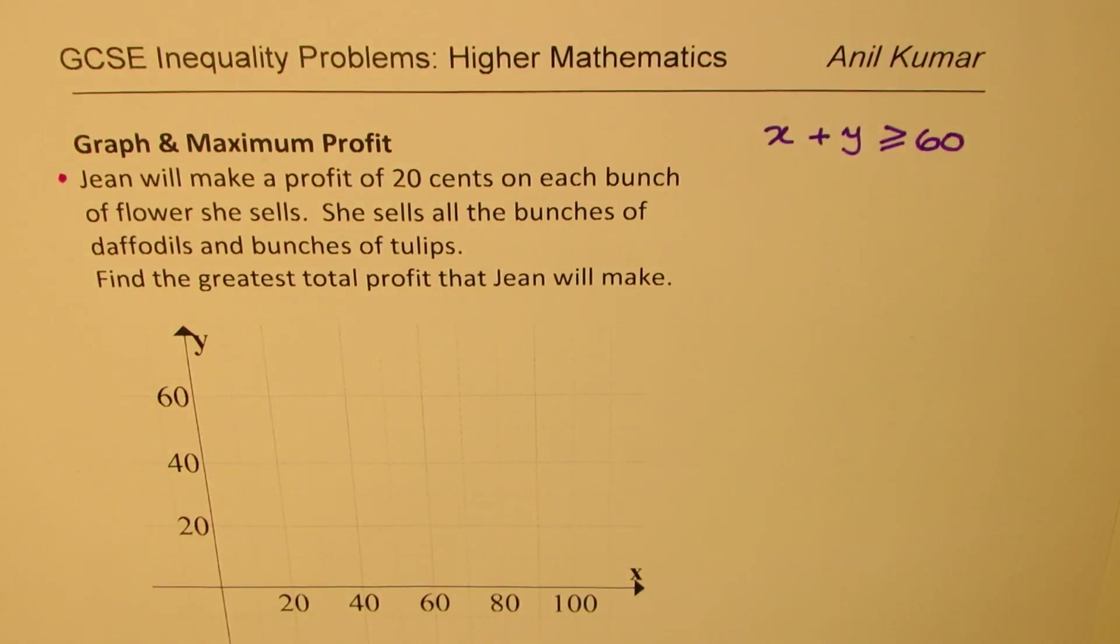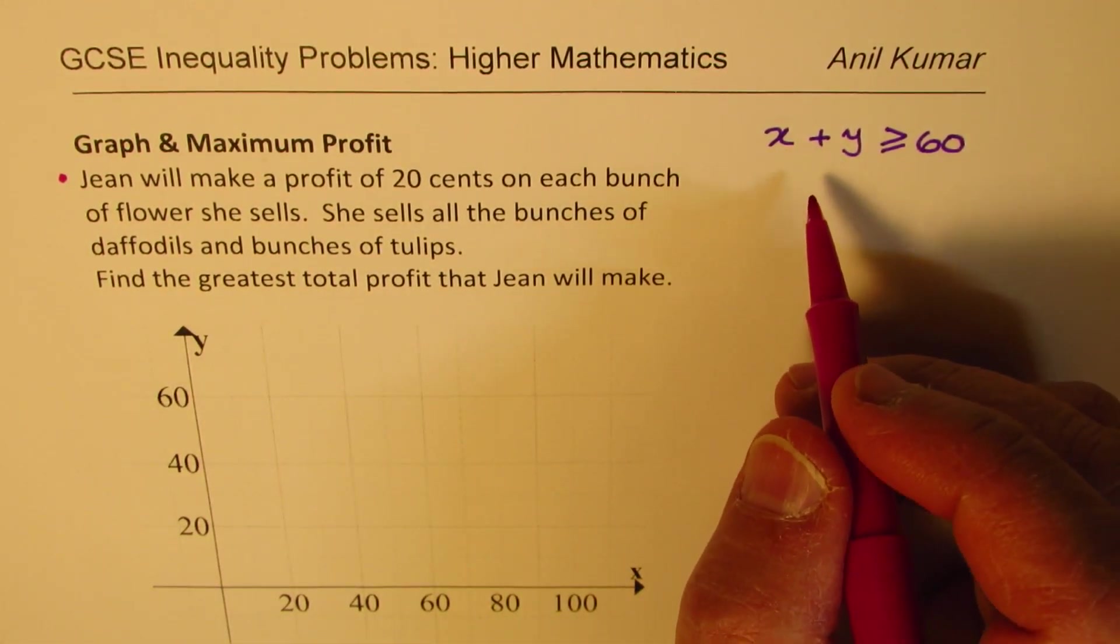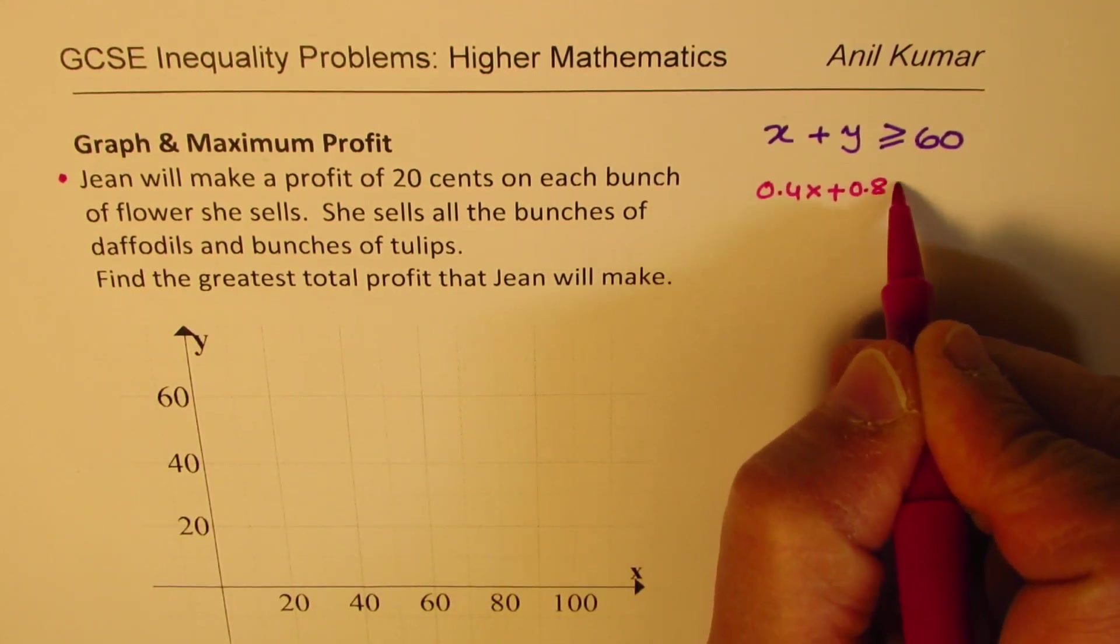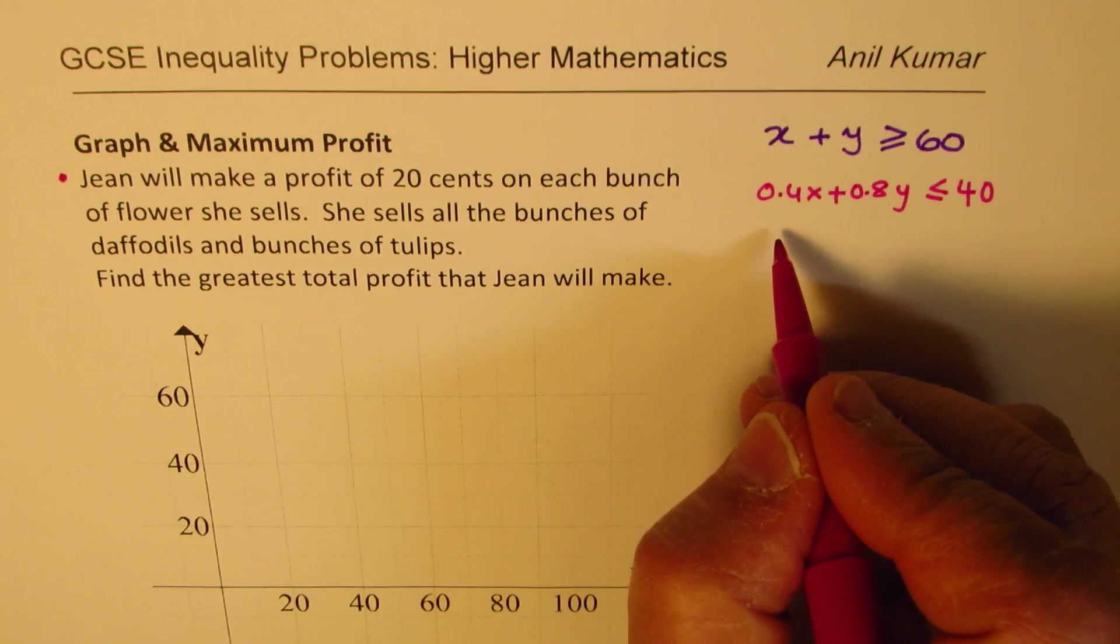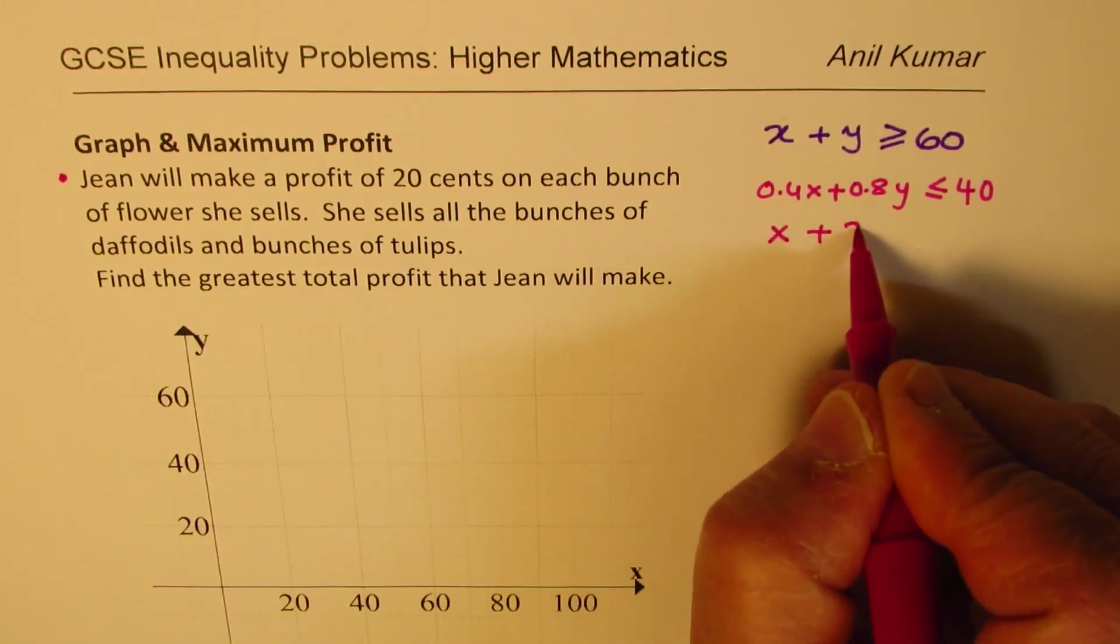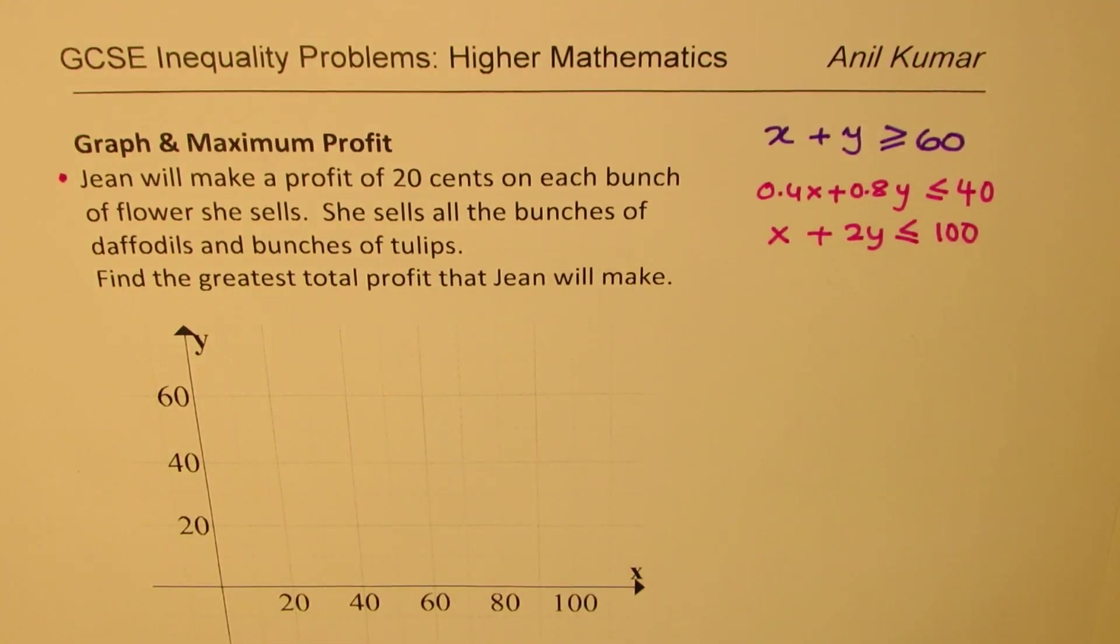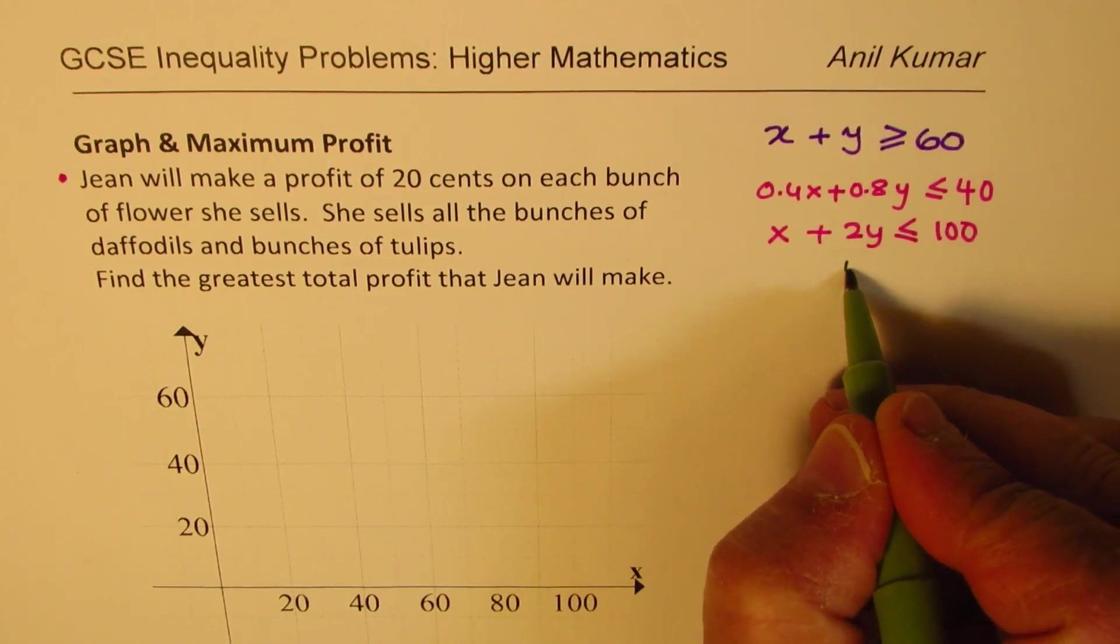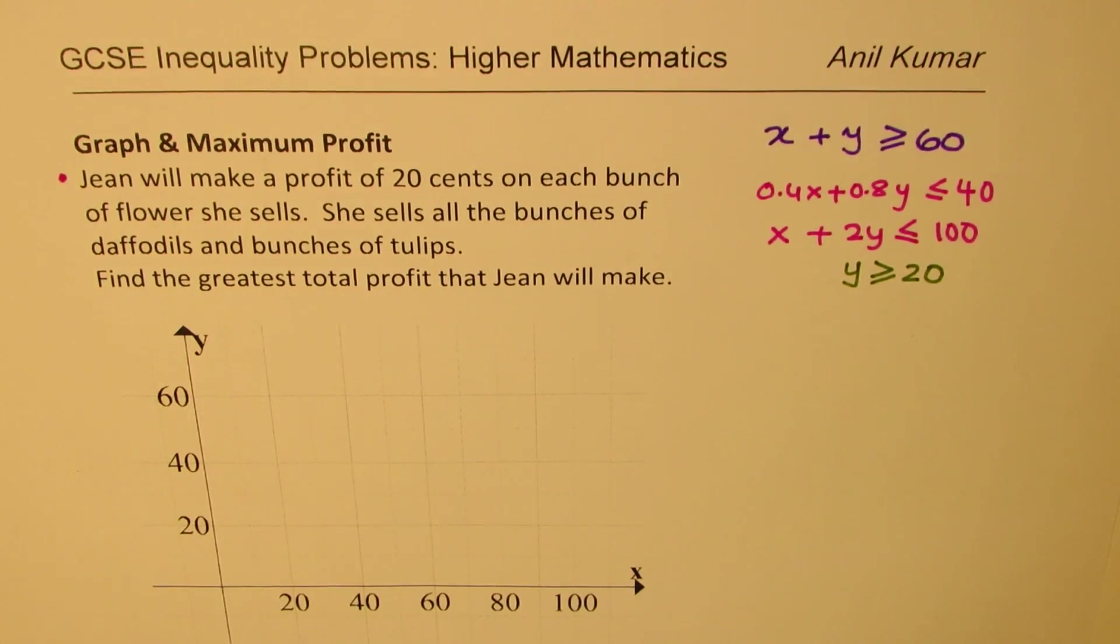So X plus Y is greater than or equal to 60. This is our first equation. The next equation which we have is about the cash, how much maximum she is able to spend. So it was 0.4X plus 0.8Y was less than or equal to $40 which we divided by 0.4 to get X plus 2Y less than or equal to 100. And the last one is about tulips. That we want at least 20 tulips. So Y is greater than or equal to 20.